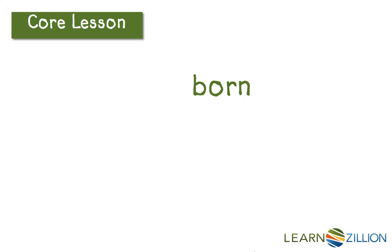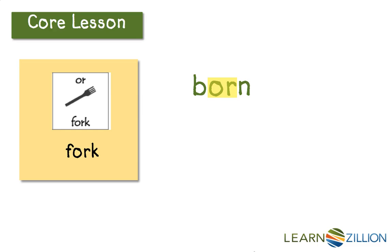Let's see if there's any letters we could group together to change the sounds in this word. I see an O and an R right next to each other, and I remember that every word with the syllable OR makes the OR sound like in fork. So, looking at this word from left to right, I notice it starts with a B, then has the syllable OR, and ends with an N. Since B makes the B sound, OR makes the OR sound, and N makes the N sound, I can blend the sounds together: B-OR-N. Born. This word is born.